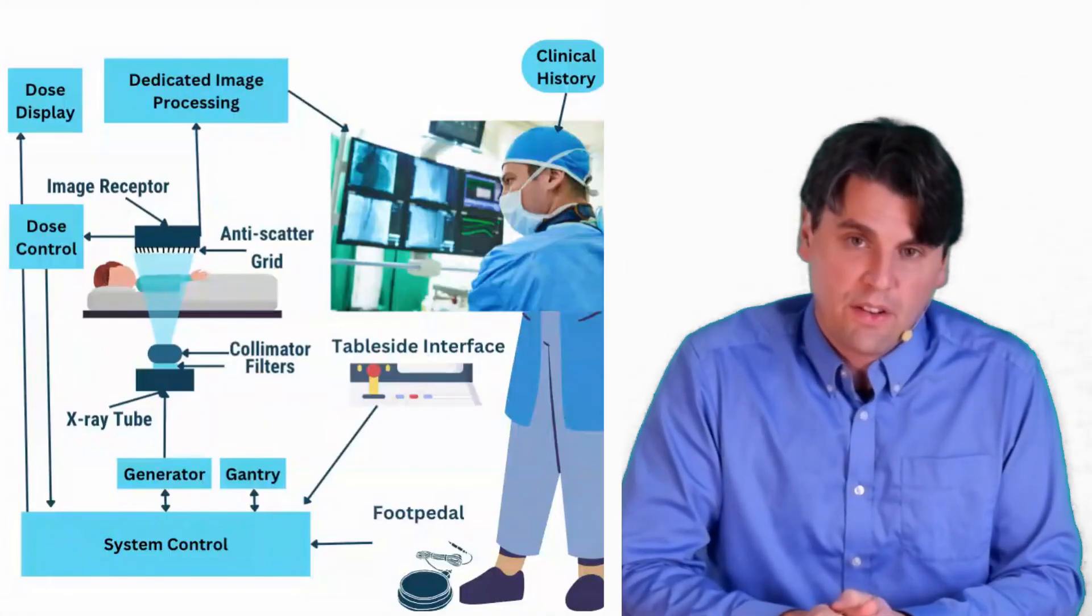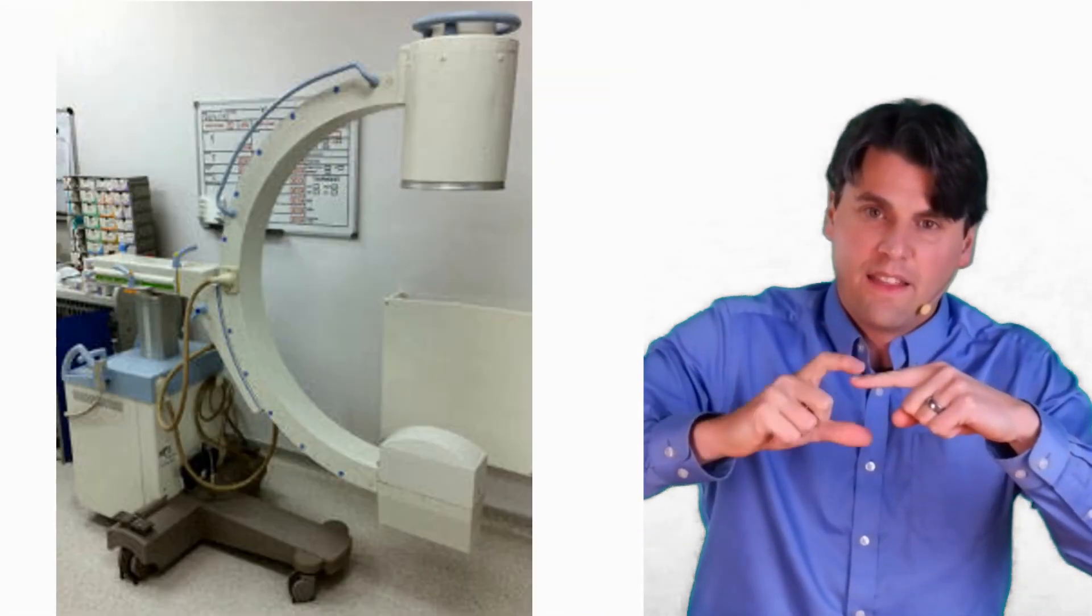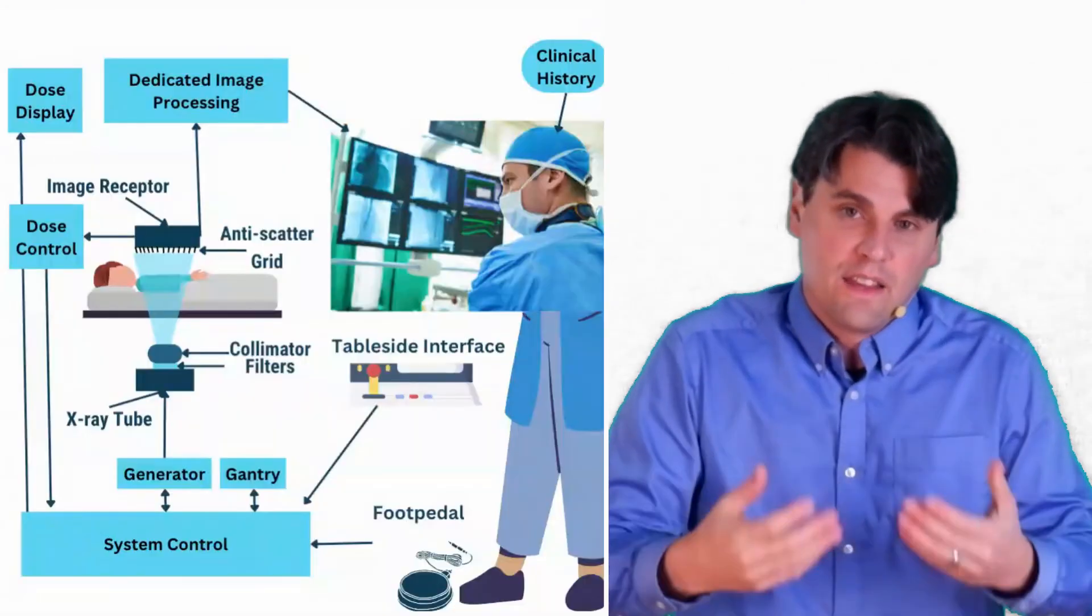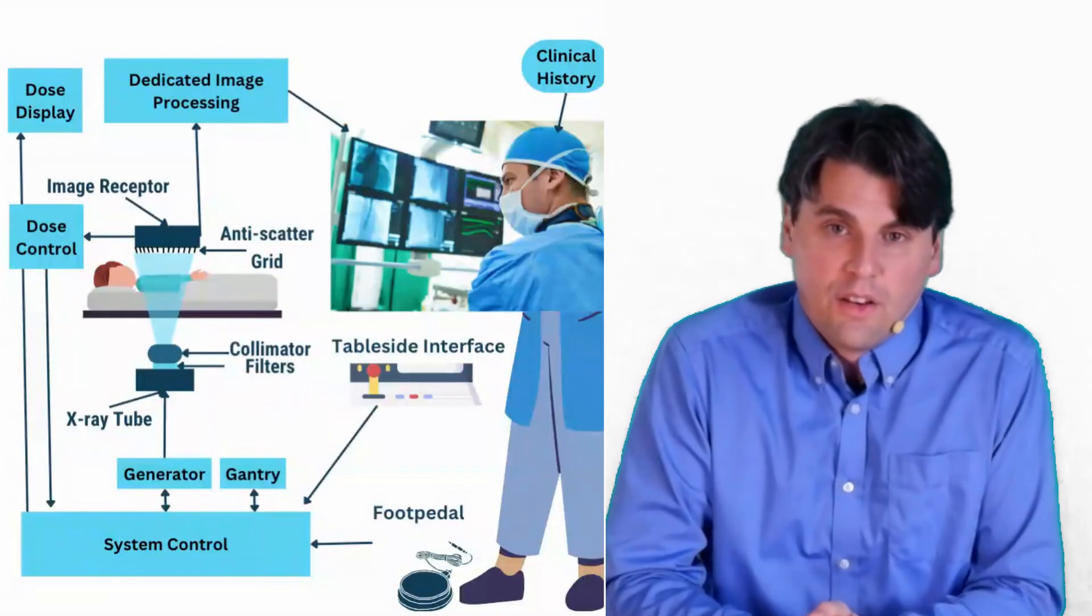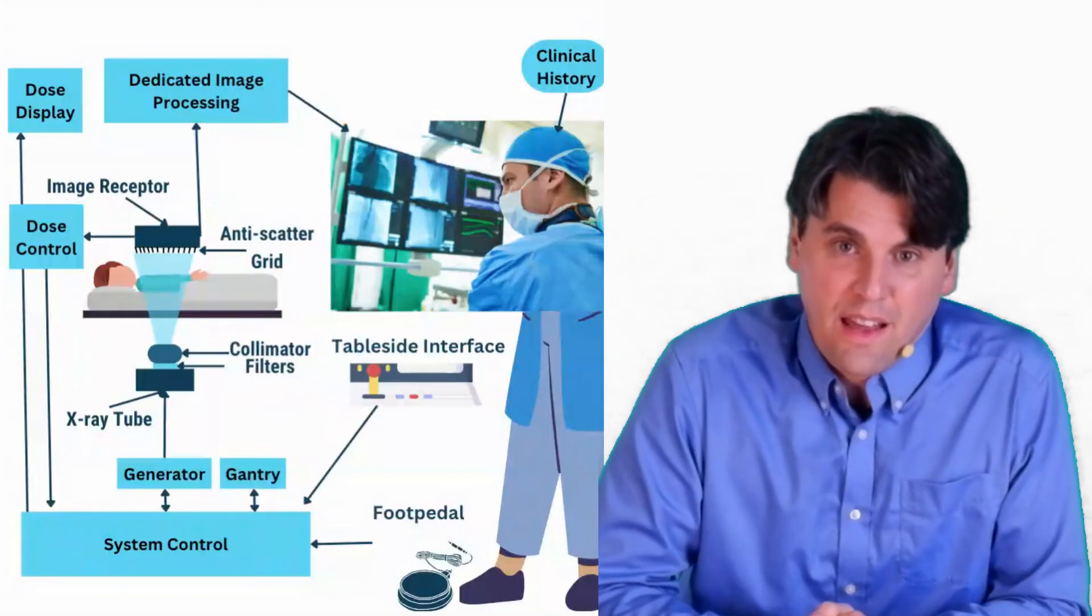You also have a gantry, which is going to be able to typically perform significant motions. And in the case of the interventional suite, a lot of times they're in what we call a C-arm, the patient's in there. And then there's a C-arm that can move about the patient, such that the interventionalist can get in and do their work without being blocked by the actual x-ray system itself.